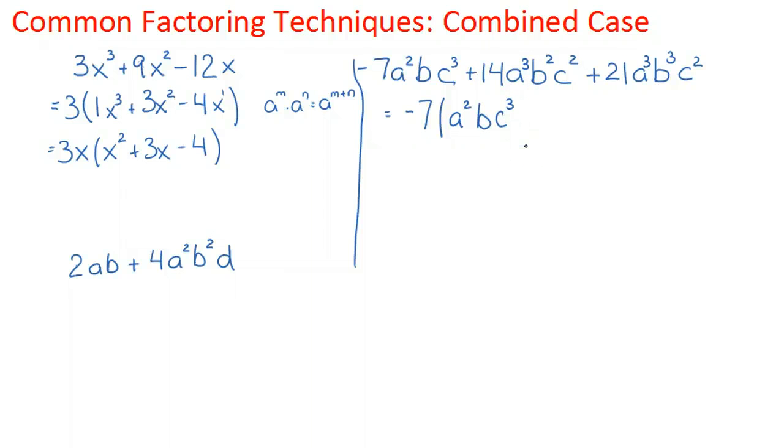Factor negative 7, so that plus 14 becomes minus 2, giving 2a³b²c², and then minus 3a³b³c².